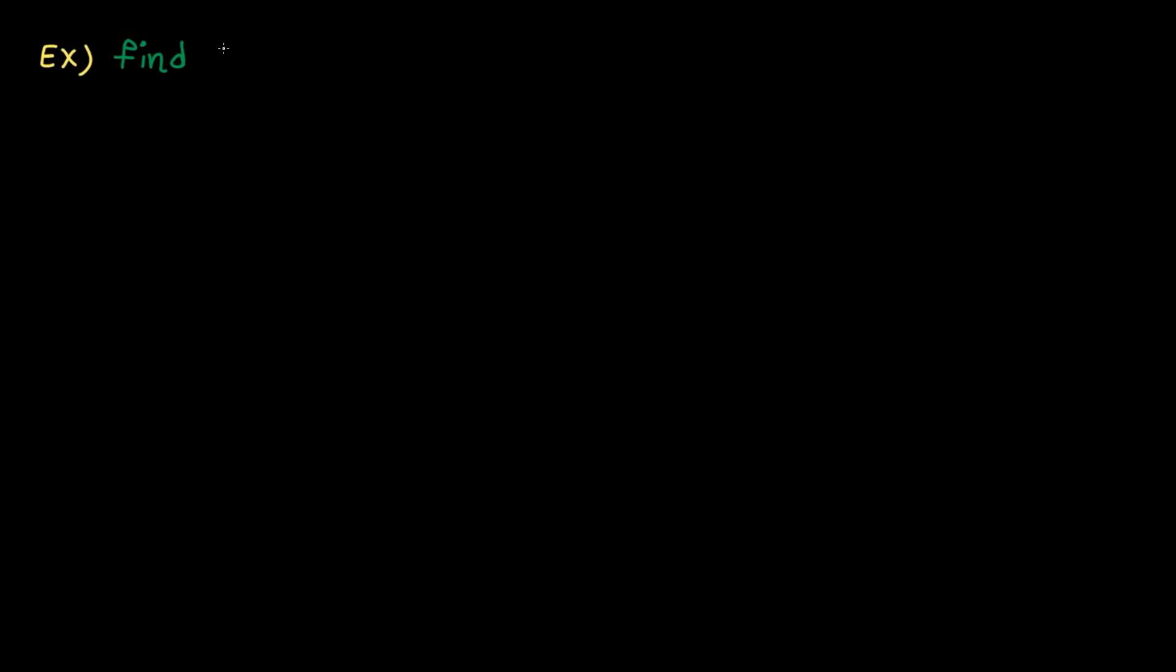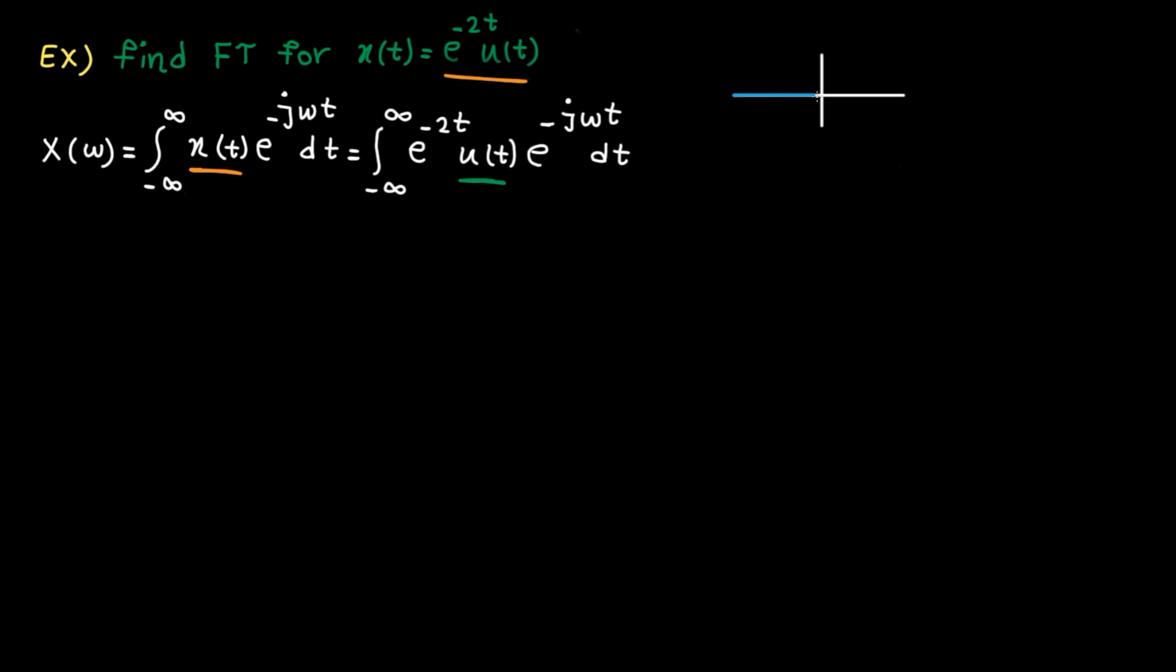Last example. Find Fourier transform for this exponential function. Here is the Fourier transform integral. Let's replace Xt with this function. Ut is the unit step function, which is 0 for t less than 0 and 1 after that. So the integral is non-zero from 0 to infinity, where ut is 1.